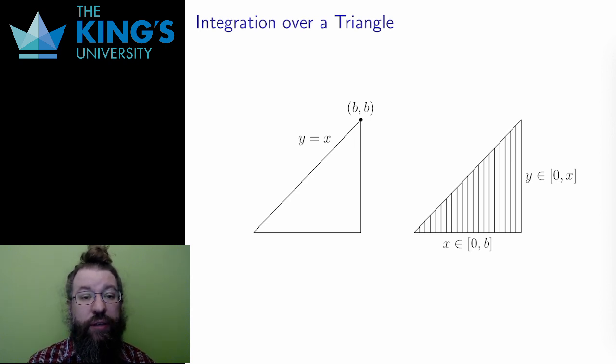In an iterated integral, the outside bound always has to be constant. So I set the outside bound to be x in the range 0 to b. But then, the inside bound can depend on a variable that is outside it. So, for the bound on the y variable,